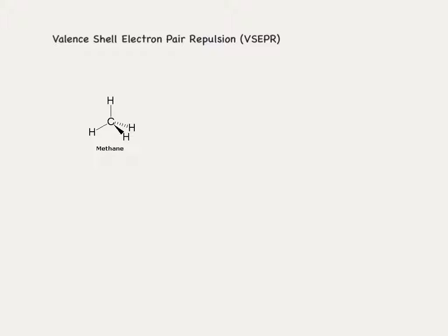The shape of a molecule is determined by the number of pairs of electrons around the central atom and by how those electron pairs repel each other. Bonding pairs of electrons repel each other equally, and in methane I have a total of four bonding pairs (BP). Because they're all the same, they repel each other equally, making the angle between the carbons and the hydrogens the same — 109.5 degrees for that three-dimensional object.